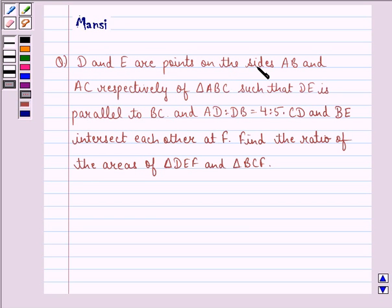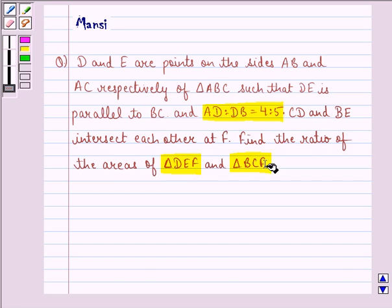The question says: D and E are points on the sides AB and AC respectively of triangle ABC, such that DE is parallel to BC and AD is to DB is equal to 4 is to 5. CD and BE intersect each other at F.